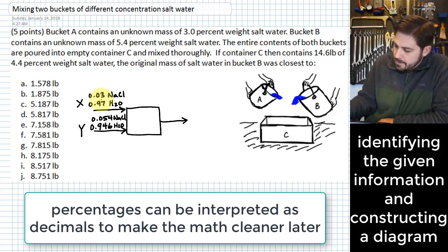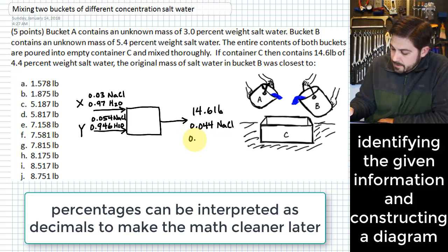All right and then coming out of the other end of this process we have 14.6 pounds of 4.4 percent salt so 14.6 pounds at 0.044 which means that we have 0.956 water.